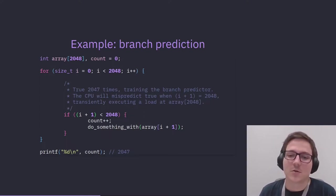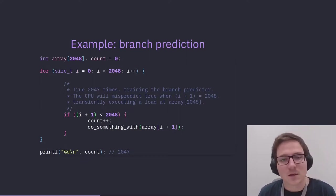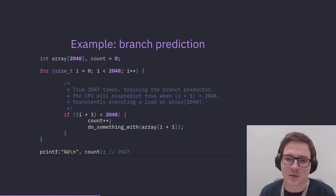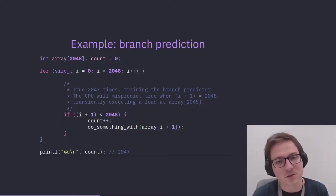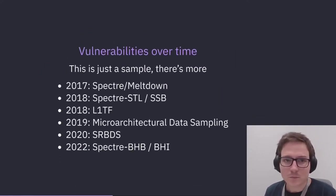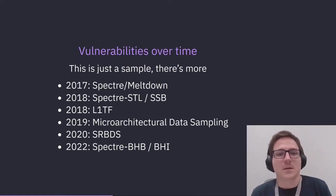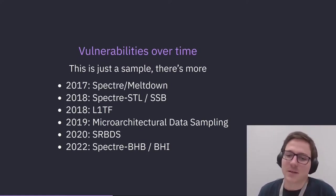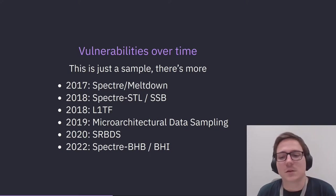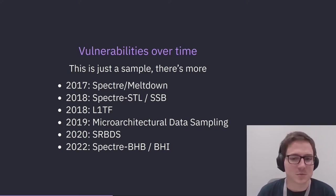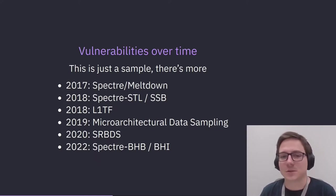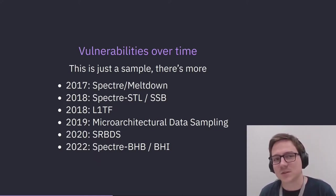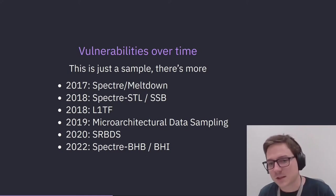This is an example of how you can induce CPUs to do transient execution — you can deliberately mistrain them. It's not just the branch predictor; there are a number of different things within CPUs that make educated guesses that you can attempt to bamboozle. Looking at some vulnerabilities over time, a lot of people have heard of Spectre and Meltdown and not much else. This is a class of vulnerability — these vulnerabilities are the gifts that keep on giving.